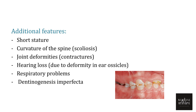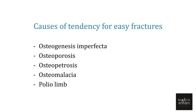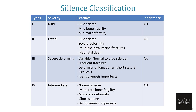Some cases of OI also present with a disorder of tooth development called dentogenesis imperfecta. Apart from osteogenesis imperfecta, other causes of tendency for easy fractures include osteoporosis, osteopetrosis, osteomalacia, and poliolimb.